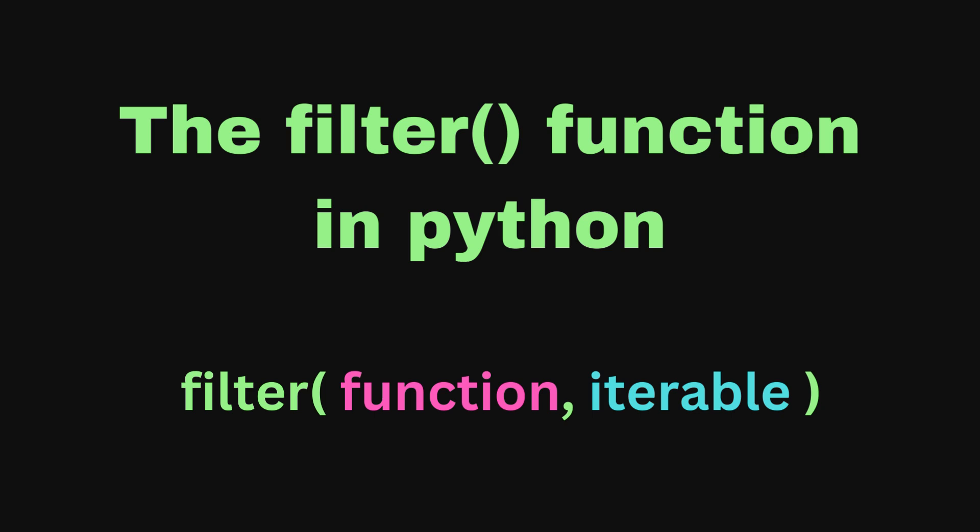This function allows you to pass in a function and an iterable, and it returns an iterator yielding those items of the iterable for which the function returns true.